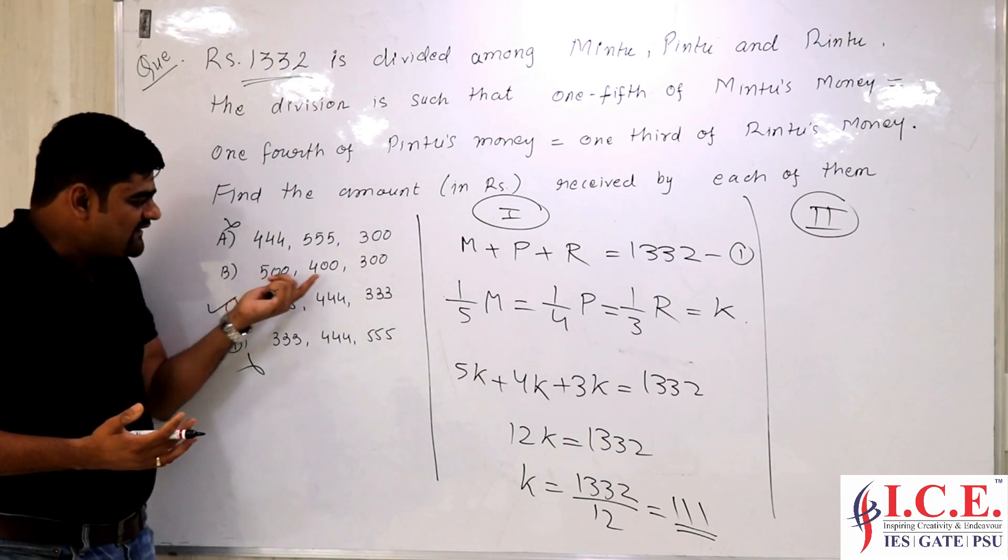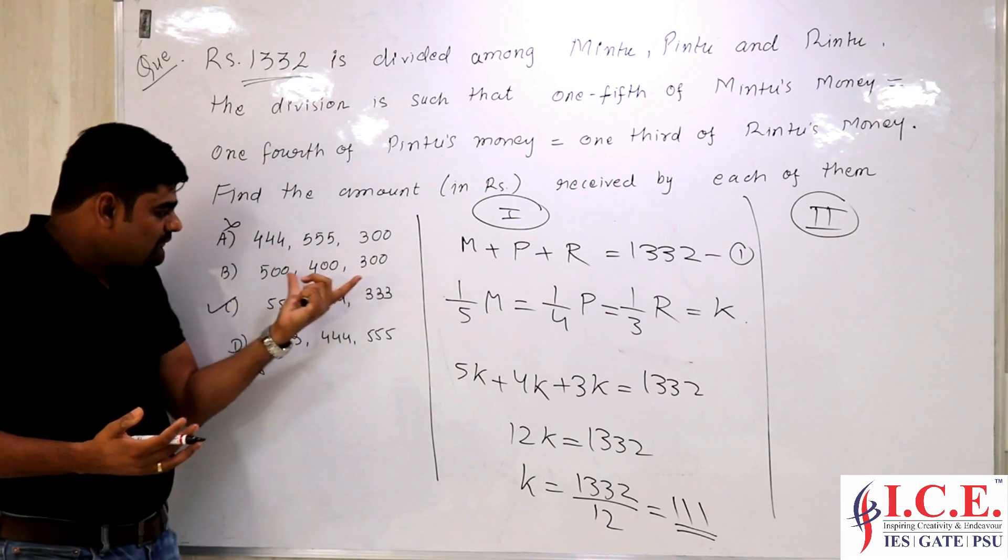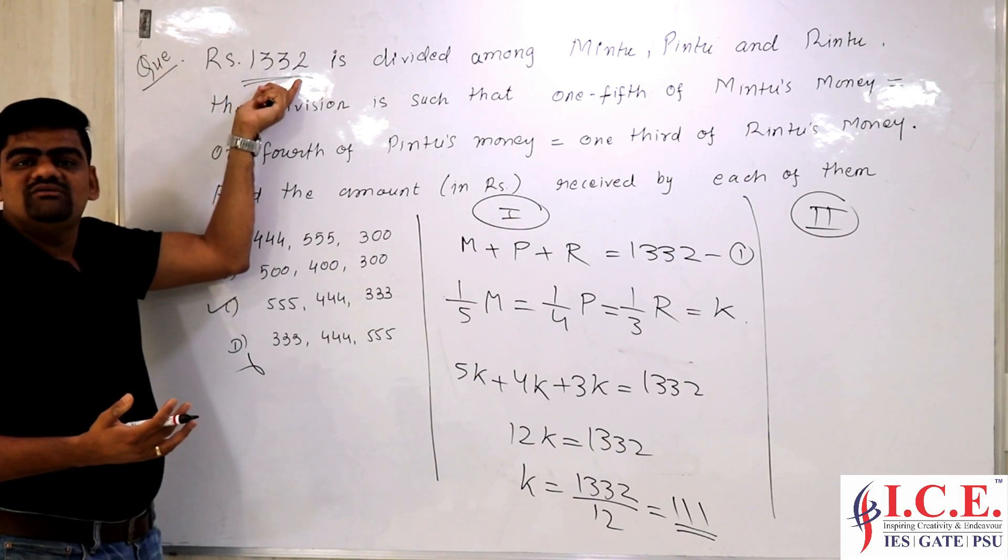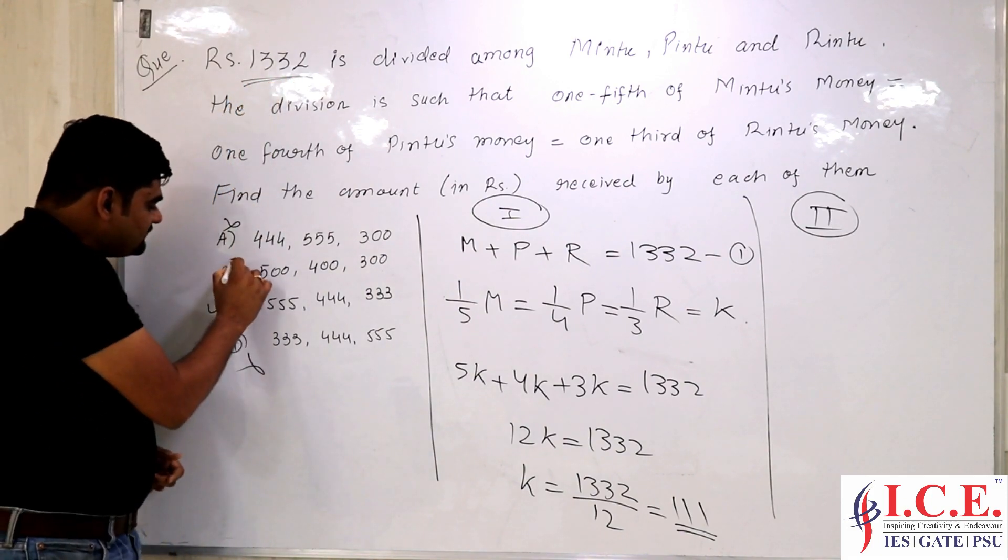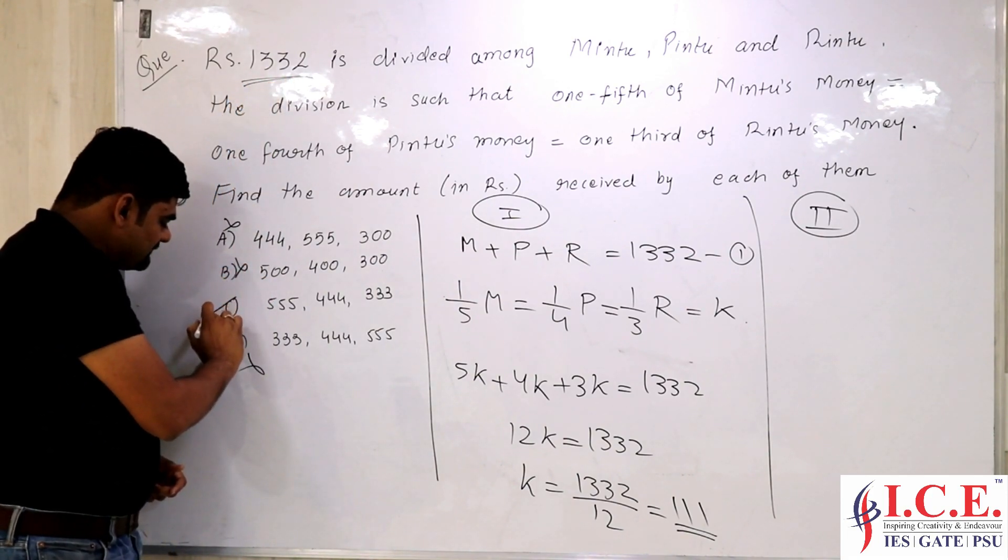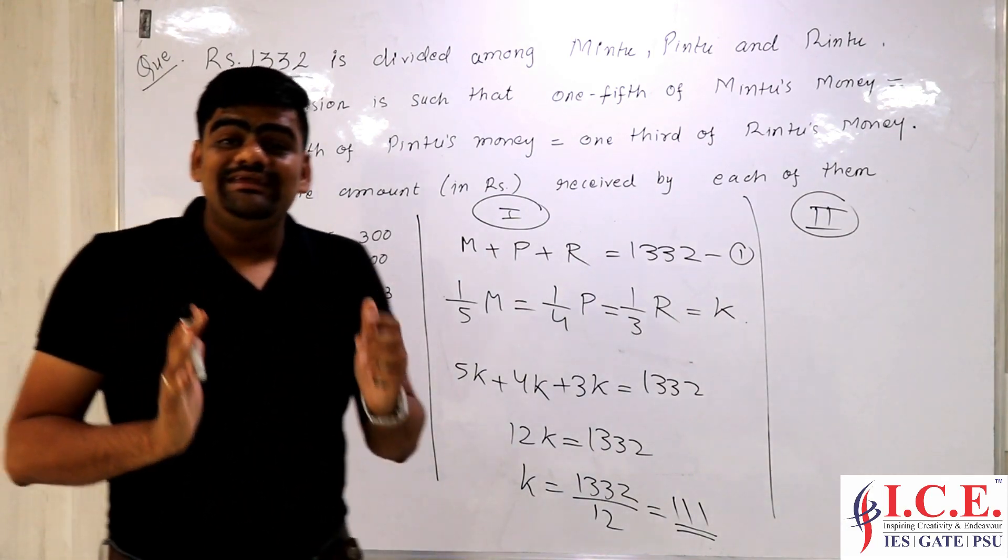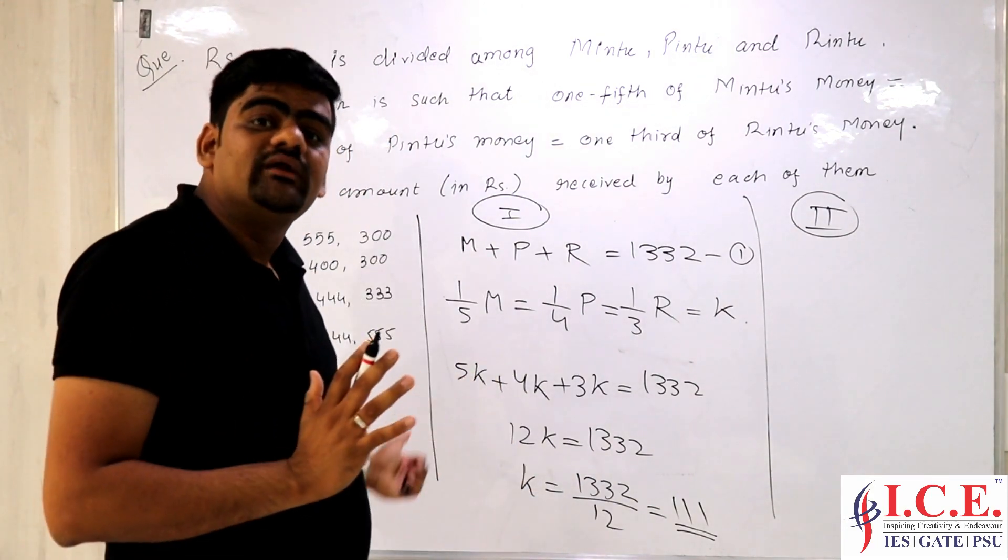Secondly, when I see this is a multiple of 5, this is a multiple of 4, this is a multiple of 3, but the total is not coming out to be 1332. So definitely this is going to be rejected and ultimately you will get the answer. Without even attempting the question, you will get the answer.